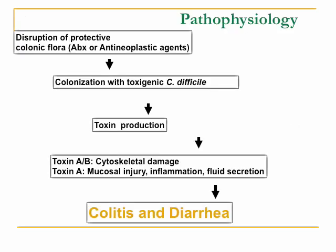Initially, disruption of colonic flora — from antibiotics or anti-neoplastic agents — leads to colonization of toxigenic C. diff, which starts producing toxins. Toxins A and B are the most common, but there are other forms including the O27 strain. Toxin A and B cause cytoskeletal damage; toxin A is mainly responsible for fluid secretion, producing the watery diarrhea.